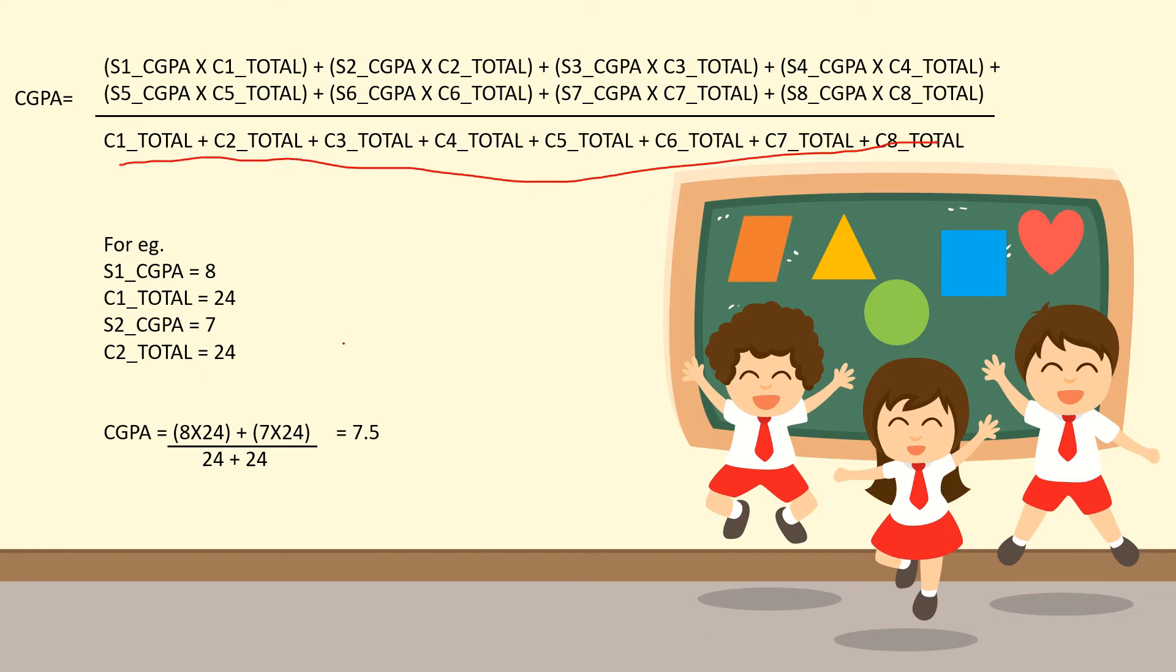Now for example, let's calculate the CGPA for two semesters with the example as semester one CGPA as 8 and the C total as 24. Semester two CGPA as 7 and the C total as 24. That will be 8 into 24 plus 7 into 24 whole divided by 24 plus 24. When you calculate this, you'll get 7.5. So 7.5 is the CGPA for two semesters.